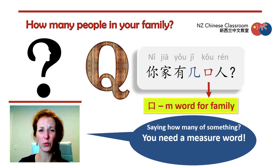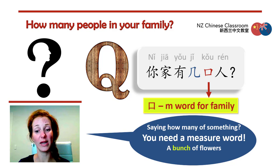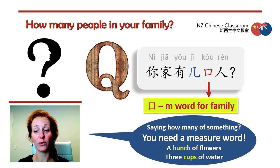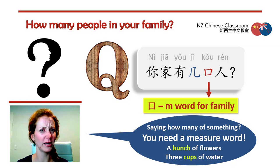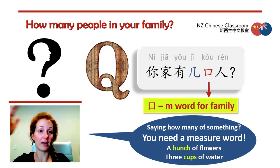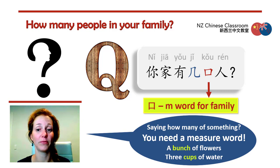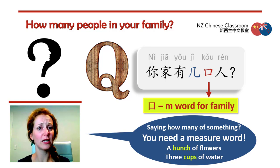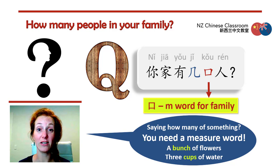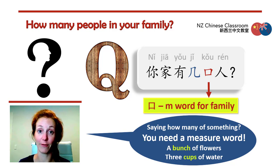So in English, we kind of have some measure words. We have 'a bunch of flowers,' or 'three cups of water.' Can you think of any other ones we have in English? Maybe 'a stack of books' — that sort of thing. So in Chinese, you always need a measure word anytime you're saying how many of something you have.